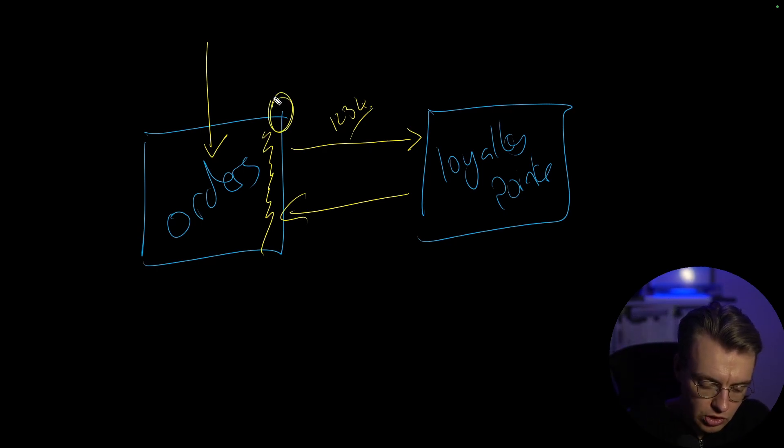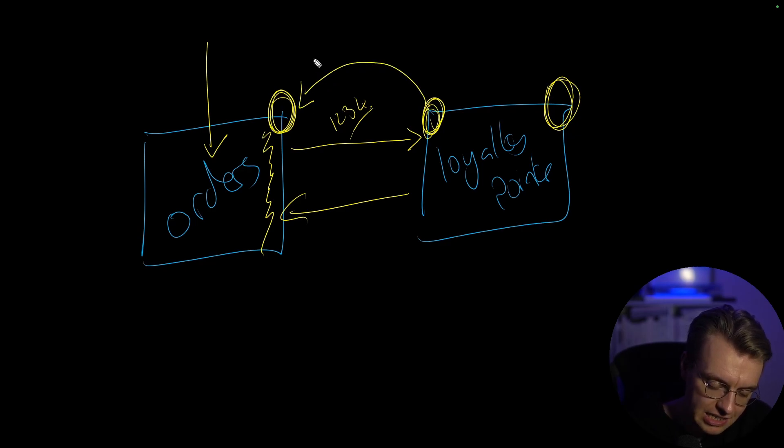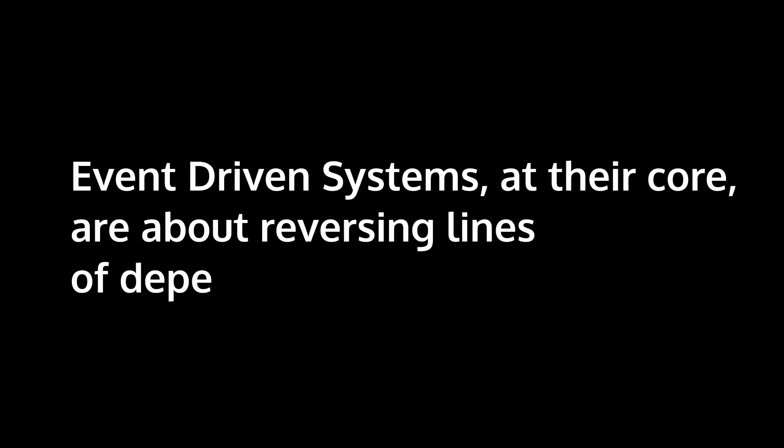And this brings about an interesting question. Should the order processing service actually care about the fact that the loyalty point service exists, even if this is a modular application, a modular monolith? Does it matter? Is that line of responsibility correct? And I would argue it isn't. It isn't the order processing service's responsibility to tell the loyalty point service to add loyalty points. The loyalty point service should be reacting to the fact that an order has been confirmed. And this is one of the things that event-driven systems can give you, adopting more message-driven systems. An idea I took from one of Martin Fowler's talks on this topic is that event-driven systems and message-driven systems at their core are about reversing these lines of dependency.